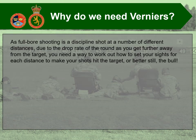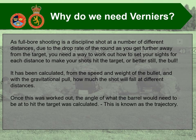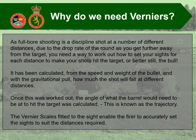As full ball shooting is a discipline shot at a number of different distances, due to the drop rate of the round as you get further away from the target, you need a way to work out how to set your sights for each distance to make your shots hit the target — or better still, the bull. It has been calculated from the speed and weight of the bullet and the gravitational pull how much the shot will fall at different distances. Once this was worked out, the angle the barrel would need to be at to hit the target was calculated — this is known as trajectory. The vernier scales fitted to the sight enable the firer to accurately set the sights to suit the distances required.